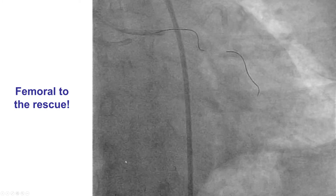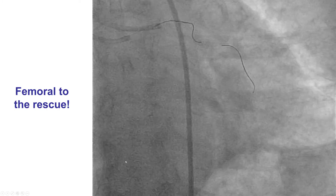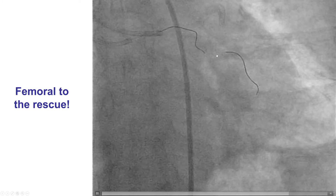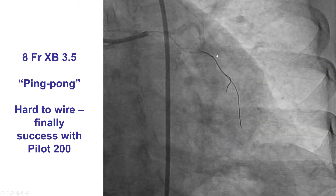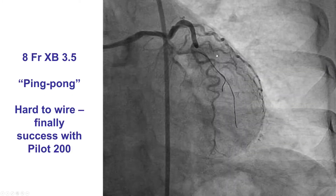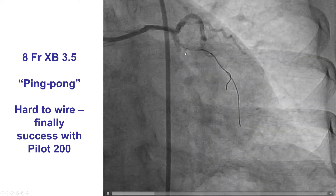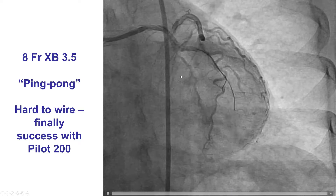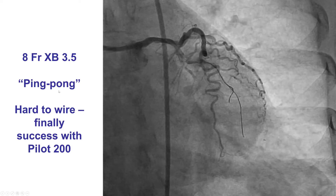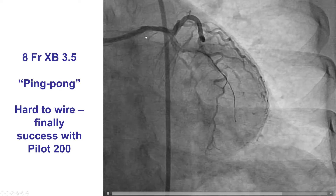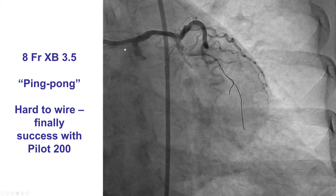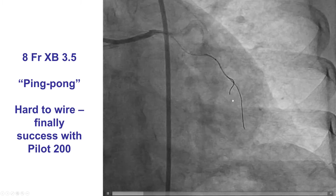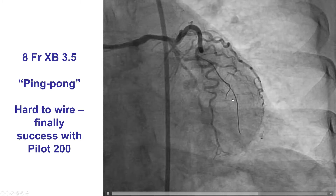An EBU 3.5 8 French guide was used. We had some difficulty, but were eventually able to wire into the first obtuse marginal branch, which seemed to help restore a little bit more flow into the distal circumflex. We did this using a ping-pong technique by pulling back our radial guide while leaving the first wire in place to serve as a marker about where the true lumen was.